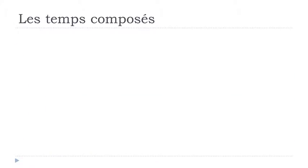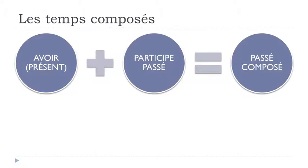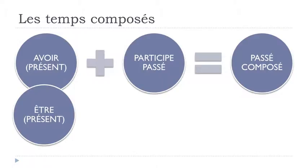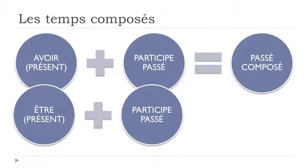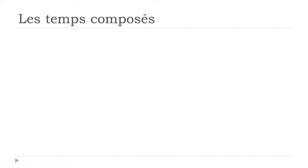We'll start with le passé composé. The rule is: first use avoir — if you're not sure whether the verb requires être or not, then put avoir. Avoir should be at the present form, then you put your participe passé form and you get the passé composé. In some cases — exceptions, reflexive verbs — you will use être at the present tense plus le participe passé.